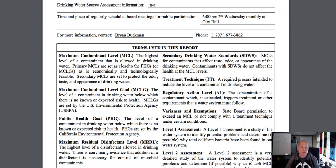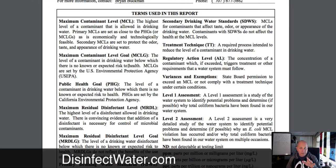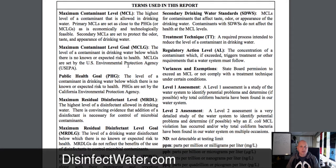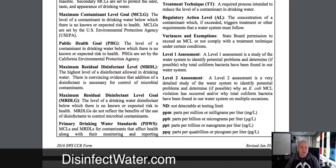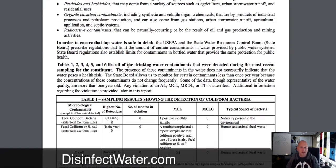We went over the anatomy of it yesterday, but now we want to go into details. All of the reports will have this area called 'terms used in this report.' This gives you an understanding of what each of the terms are — what an MCL is, which is the maximum contaminant level, and the MCLG, which is the goal for the maximum contaminant level, public health goals, maximum residual disinfection level, etc. These are basically all of the standards that exist to say whether your water is safe or not.